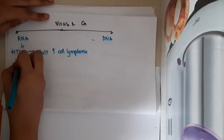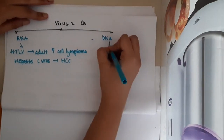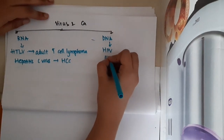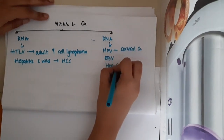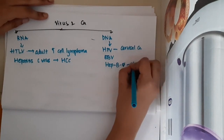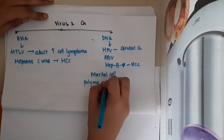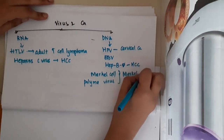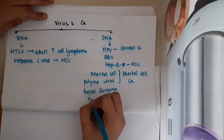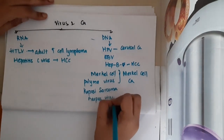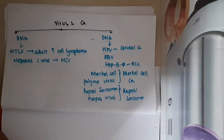Hepatitis C virus will result in hepatocellular carcinoma. Among DNA viruses, human papilloma virus results in cervical carcinoma, Epstein-Barr virus results in many carcinomas, hepatitis B virus results in hepatocellular carcinoma, Merkel cell polyoma virus results in Merkel cell carcinoma, and Kaposi sarcoma herpes virus results in Kaposi sarcoma.